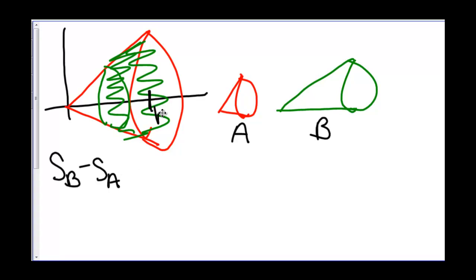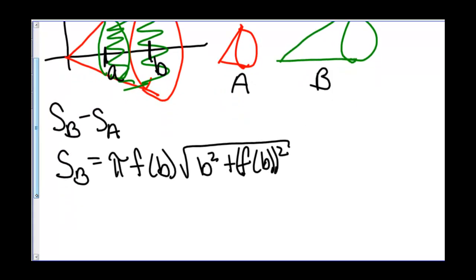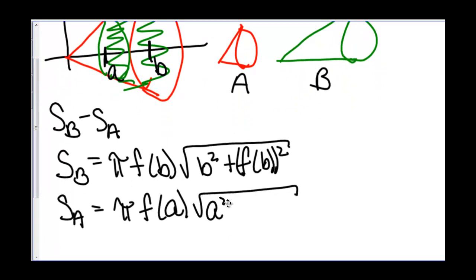So let's label some points. This is going to be b, and this is going to be a. So that means that the surface area of b is equal to π times f of b, times the square root of b squared plus f of b squared. And we know that the surface area of a is equal to π times f of a, times the square root of a squared plus f of a squared.